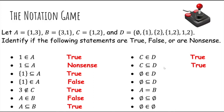What about the empty set as an element of D? That's true — the empty set is definitely there as an element. What about the empty set as a subset of D? That's tricky, but the empty set is actually a subset of everything. If it were not a subset of D, you'd have to find some element in the empty set that is not in D — but there is no element in the empty set, so you can't find an element that violates this property. So the empty set really is a subset of everything. True.